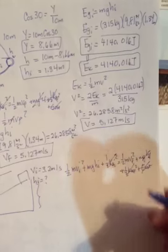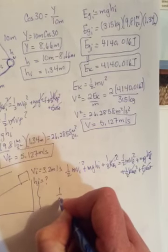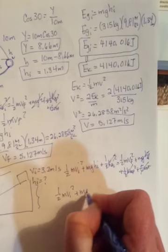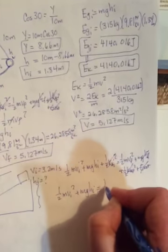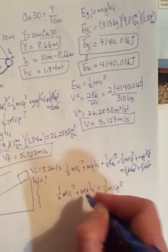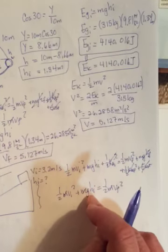So we have 1/2 mv initial squared plus mgh initial equals 1/2 mv final squared. The m's will cancel, and we're looking for h initial.